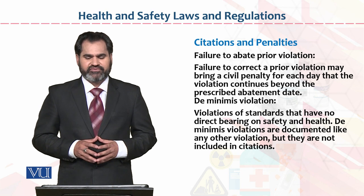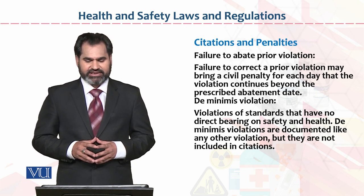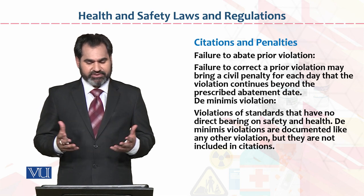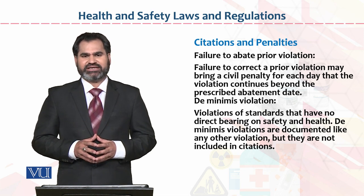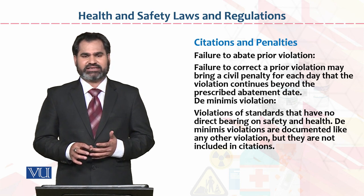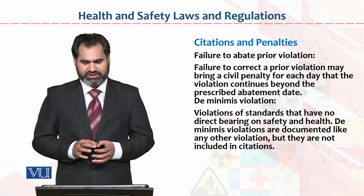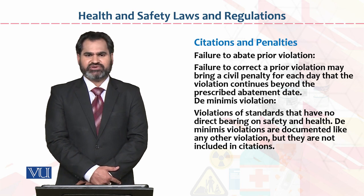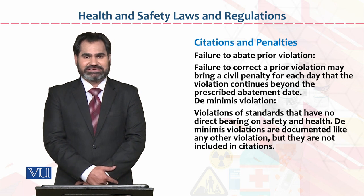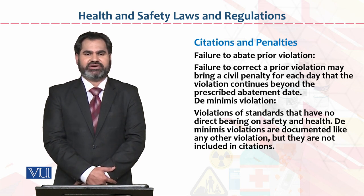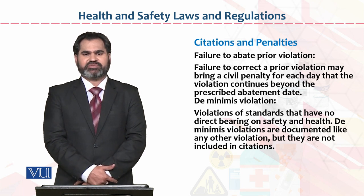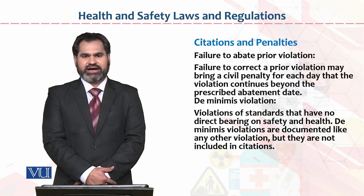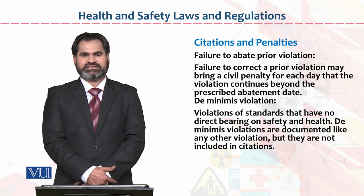Failure to abate prior violation: failure to correct a prior violation may bring civil penalty for each day the violation continues beyond the prescribed abatement date. De minimis violations — yeh violations willful bhi ho sakti hain, unlawful bhi, sometime repeatedly violation ho tia hai, sometime willful violation. Lekan in sab violations ka yeh maksad hain ke jo cheezein hain — ISO standards, ya is ke alaawa organizations ke SOPs, ya Occupational Safety and Health Association ke acts, citations, penalties — intentionally ya unintentionally unki violation ka raah ho tia hai. Violation is violation; ab us violation ko chahe small level pe dekhe, medium level pe dekhe, ya large level pe dekhe — unko avoid karna organizations ki top management, middle management, aur first line of management ki responsibility hai, taake kisi serious accident se bacha jaasake.